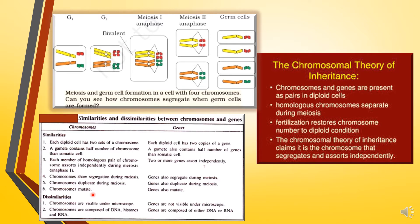Chromosomes mutate — changes can occur in the chromosome, specifically in the genes located on them. Genes also get mutated. These are the similarities between chromosomes and genes. As for dissimilarities: chromosomes are visible under the microscope, whereas genes are not visible under the microscope. Chromosomes are composed of DNA, histones, and RNA, whereas genes are composed of either DNA or RNA.